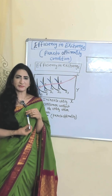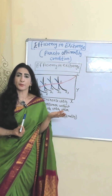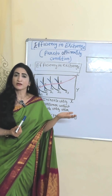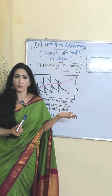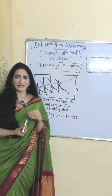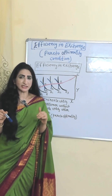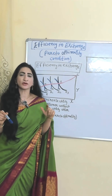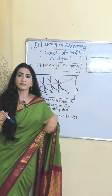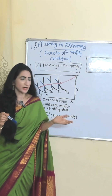Hi. Pareto optimality is a state where it is impossible to make one person better off without making someone else worse off. The first condition of Pareto optimality is efficiency in exchange. According to this condition, we cannot increase the utility of one consumer without reducing the utility of the other consumer.